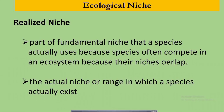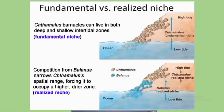The realized niche is the part of the fundamental niche that a species actually uses, because species often compete in an ecosystem because their niches overlap. It is also defined as the actual niche or range in which a species actually exists. For example, Chthamalus barnacles can live in both deep and shallow intertidal zones. Because of competition and other limitations, few species actually fill their fundamental niche — Balanus narrows Chthamalus' spatial range, forcing it to occupy a subset of the fundamental niche, which is the higher, drier zone — and this is called the realized niche.